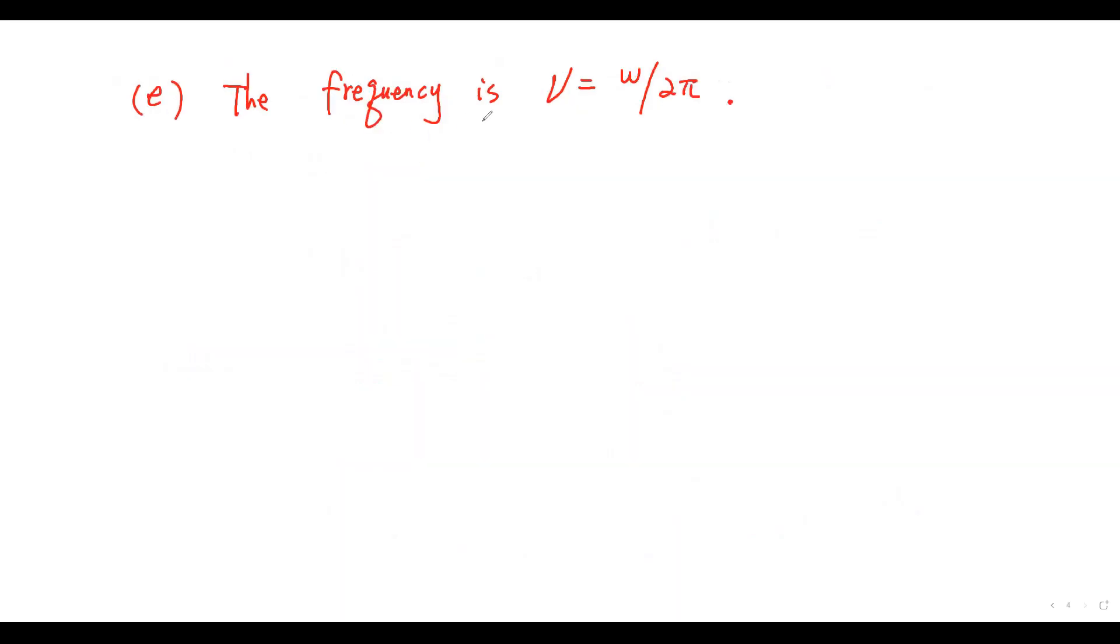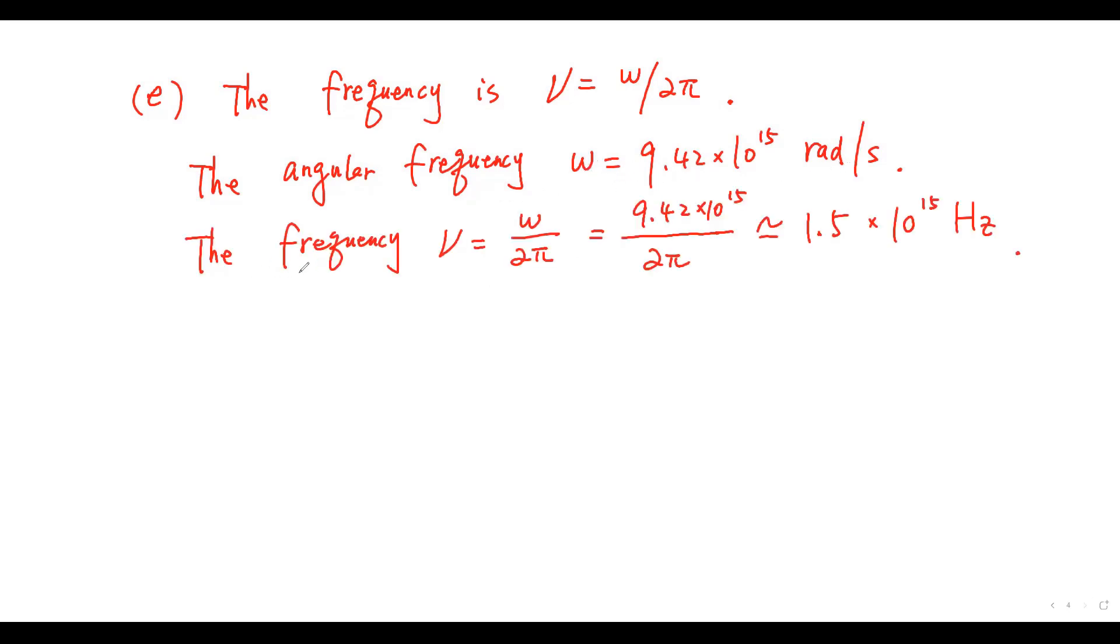The frequency is ν equals omega over 2π. The angular frequency, omega, equals this value. So, the frequency, ν equals this value. The speed is given by V equals ν times lambda. This equals this value.